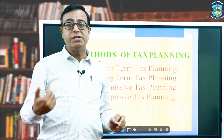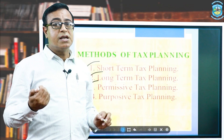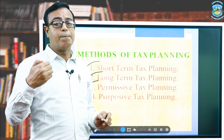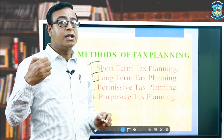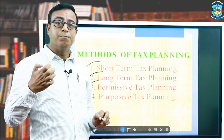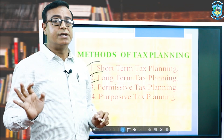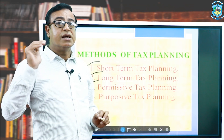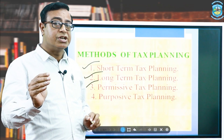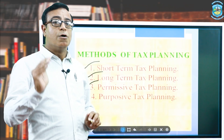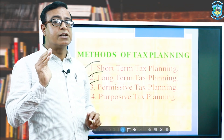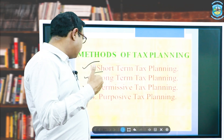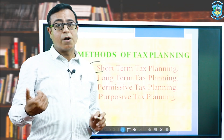Permissive tax planning means taking the permissions and grants of the government into consideration for a particular tax planning decision. 'Permissive' means permitted by the government. For example, starting a new plant in a backward state or area where permission for tax exemption for the next five or ten years is granted — that is permissive tax planning.